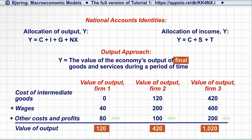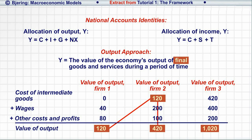However, since the value of output of firm number one of 120 enters into the production costs and the value of the output of firm number two, and the value of output of firm number two enters into firm number three.